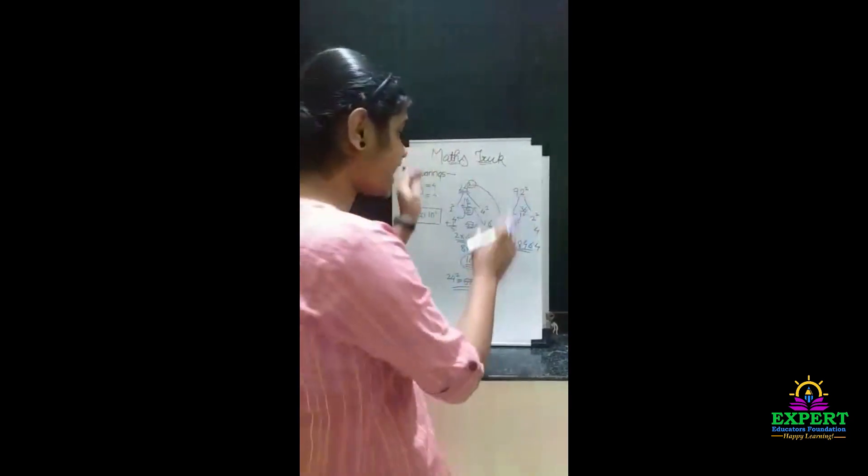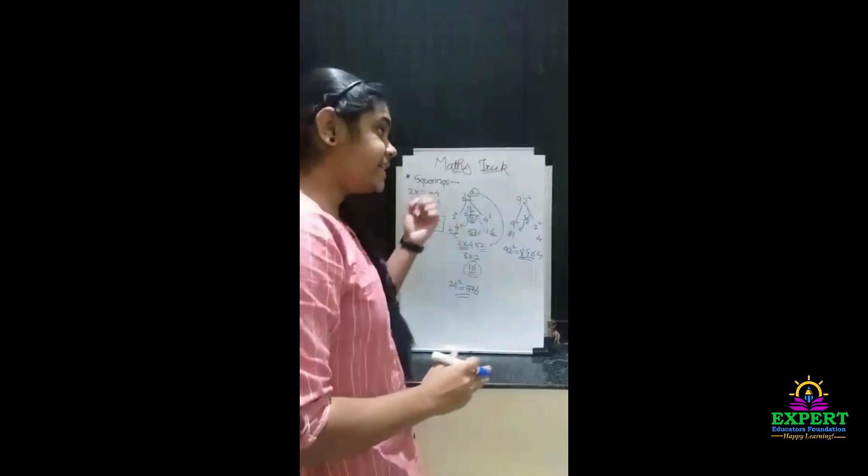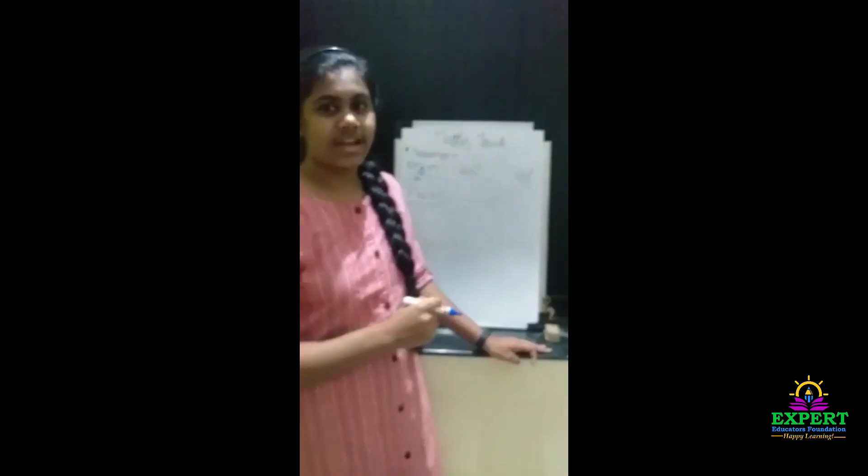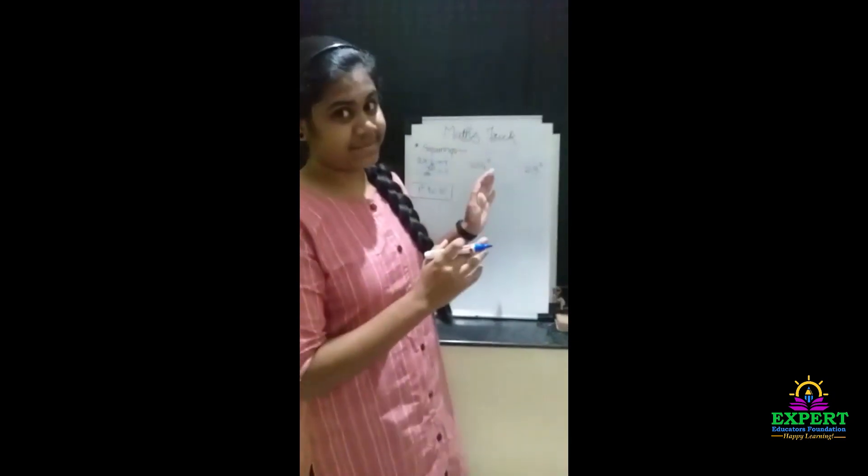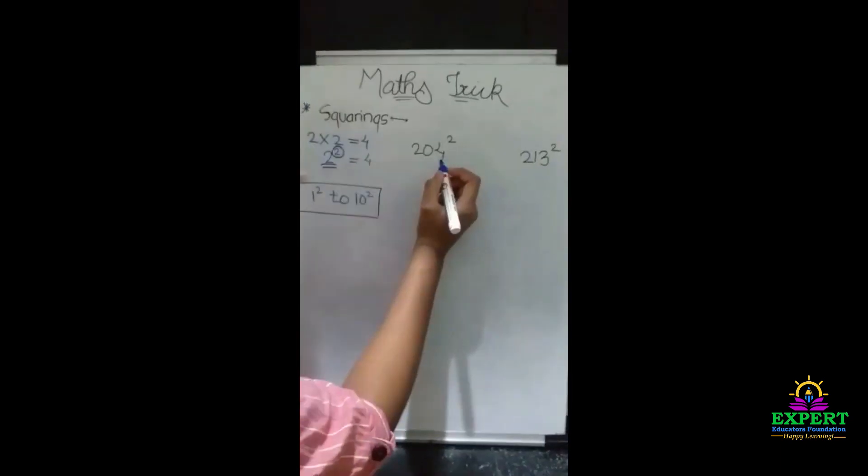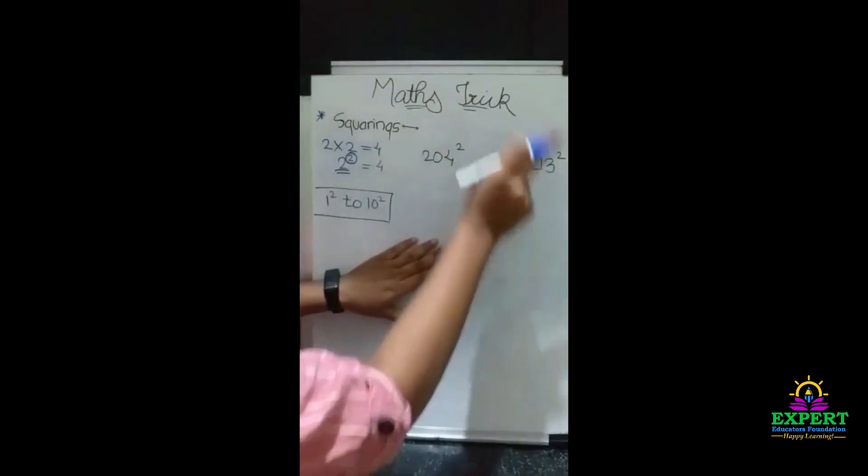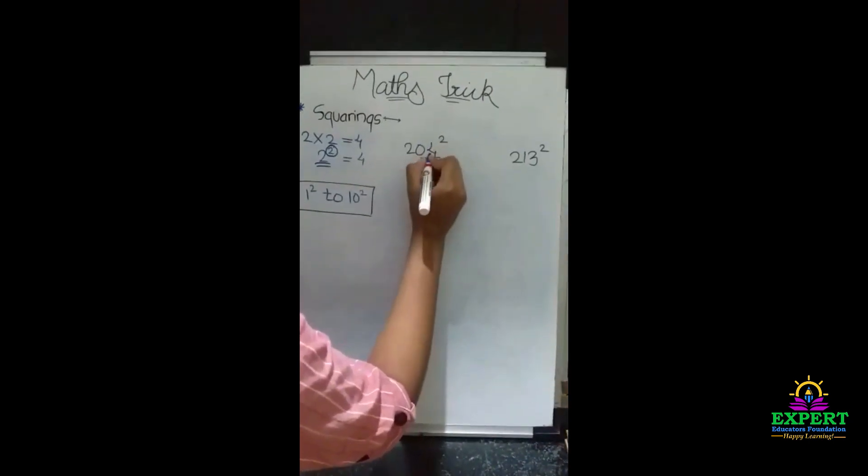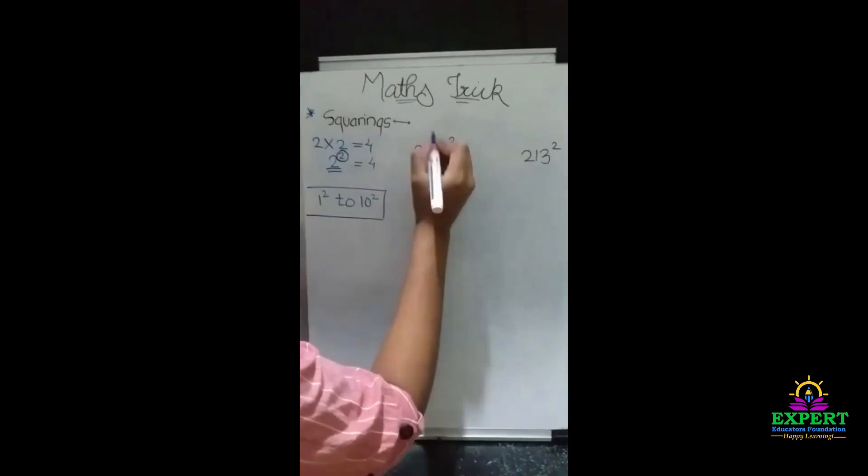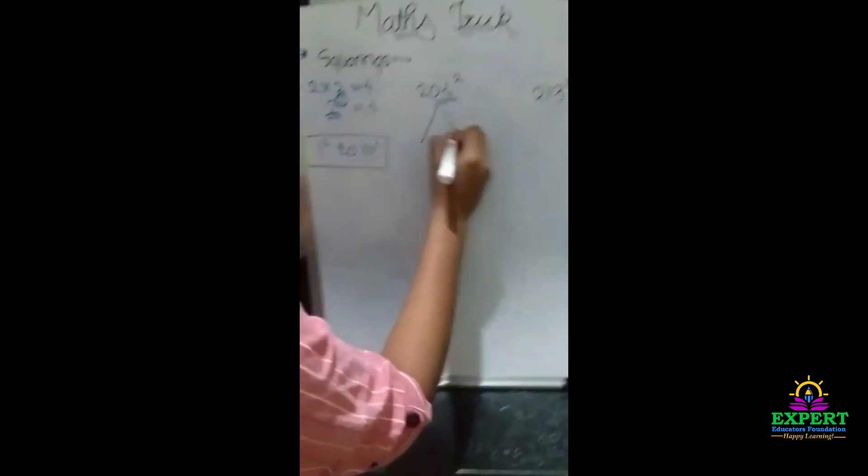Hope you understand this two-digit number how to solve. Now let's see three-digit numbers. As we see, we have taken one digit for two-digit numbers. Now for three digits, we require two digits. This is 204 squared we are going to find.